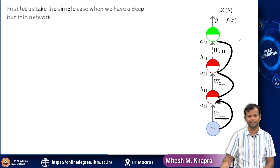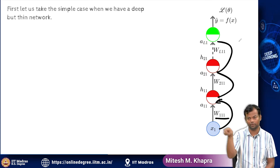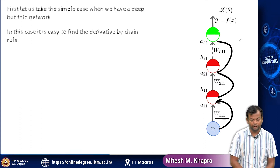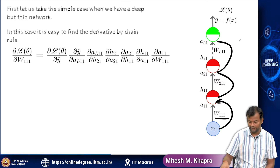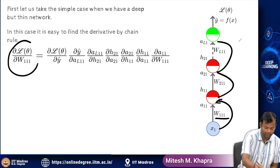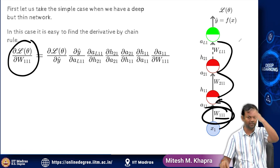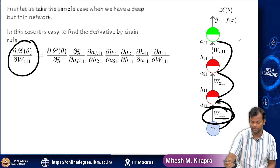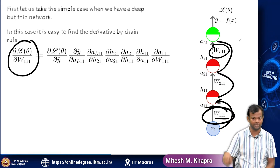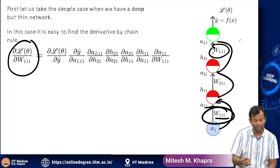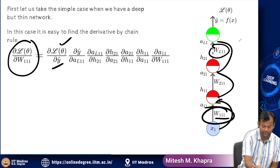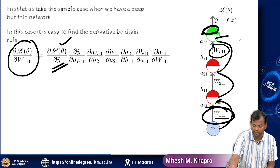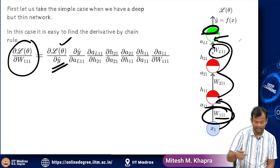It just keeps computing — a very simple computation. You can actually write y-hat as a function of x very easily in this case. Now it is easy to find the derivative by the chain rule. The derivative that I am interested in is the derivative of the loss function with respect to this weight, and this weight is very far away from the loss function. I would say this weight is closer to the loss function, and the weight that I am interested in is much farther. But I know how to use the chain rule, so I can compute the derivative of the loss function with this guy — which is the dark green guy. Then the derivative of the dark green guy with respect to Al1, and then I keep going down.